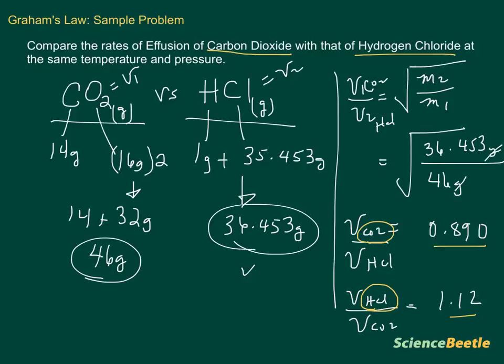If you wanted to pick one, let's say we pick the top one here. We would say the velocity or the rate of effusion of carbon dioxide is 0.890 times as fast as that of the hydrogen chloride gas. If you're looking at the other example, we would say at the bottom that the rate of effusion for hydrogen chloride gas is 1.12 times as fast as that of carbon dioxide. That's the way you do this sample problem.